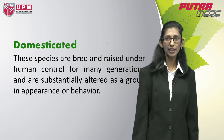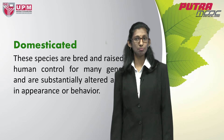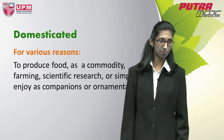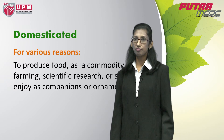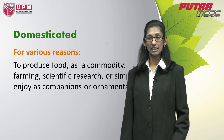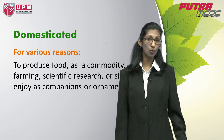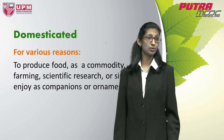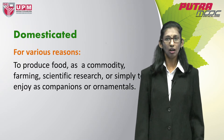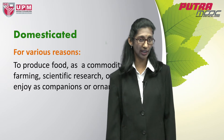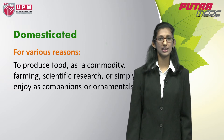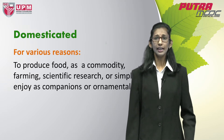Why do humans intervene? This is because we need these products for the purpose of food production, for production of commodities such as wool, cotton, silk, animals to do work, for transportation, for protection, for farming, for scientific research, or simply to enjoy either as companions or for aesthetic value such as in ornamentals.